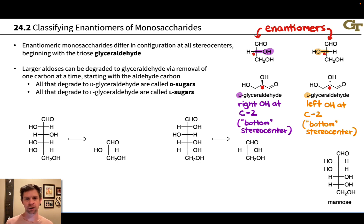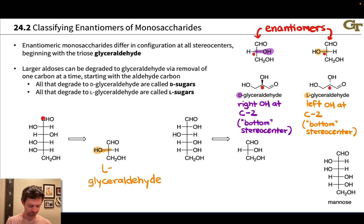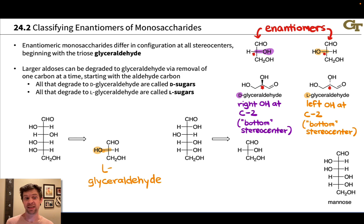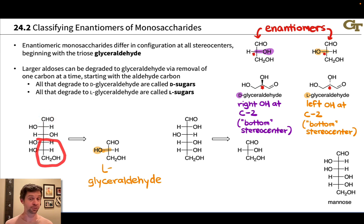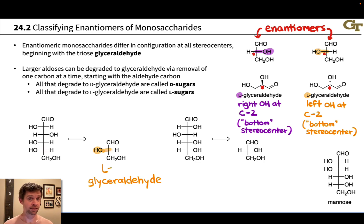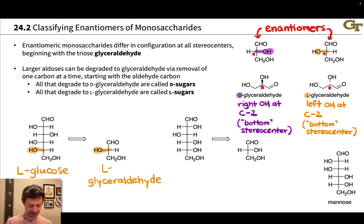Let's look at this involving a sugar bigger than glyceraldehyde. Starting with this hexose — 1, 2, 3, 4, 5, 6 carbons — it's possible to degrade through a multi-step synthetic approach this hexose back down to the triose glyceraldehyde, essentially chewing up one carbon at a time. Once we've chewed up all but the bottom three carbons, we're left with glyceraldehyde. When we do that with this sugar, we're left with L-glyceraldehyde, since that bottom carbon corresponds to the stereocenter in glyceraldehyde. Because that carbon has the L configuration, this hexose is an L sugar — specifically, because of this left, right, left, left arrangement of the hydroxyl groups, this is L-glucose.